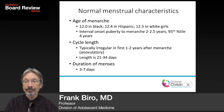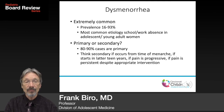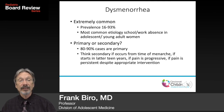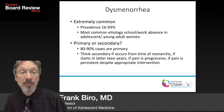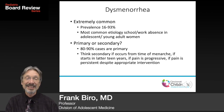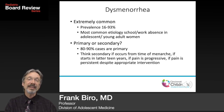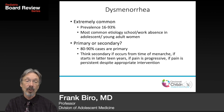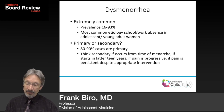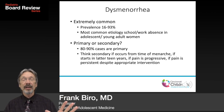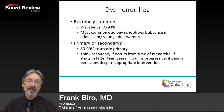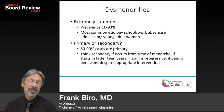Dysmenorrhea is extremely common — the prevalence in some studies is up to 93%. It is the single most common etiology of school and work absences in adolescent and young adult women. Dysmenorrhea can be either primary or secondary. For adolescents, the vast majority of cases are primary.